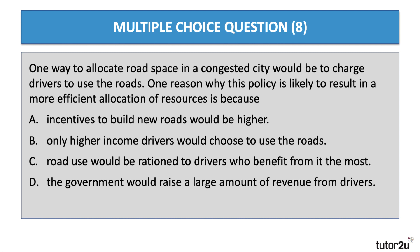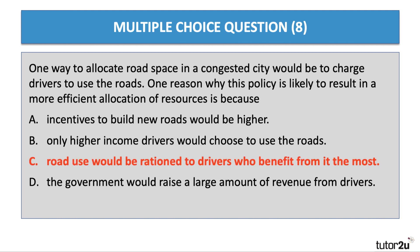The right answer is C. Road use would be rationed to those who benefit the most. If you impose an extra private cost on people using the road, people doing a cost-benefit analysis think: is it worth my while using this road space? It depends on the marginal benefit relative to the marginal cost — the private benefit relative to the private cost. So some marginal road users would decide not to use their cars, perhaps using alternative transport. The answer to question 8 is C.